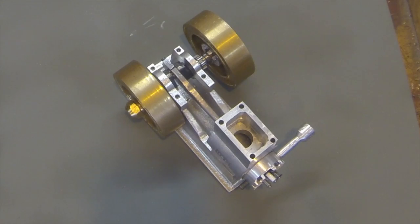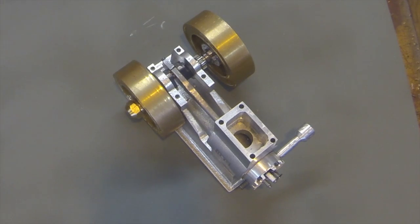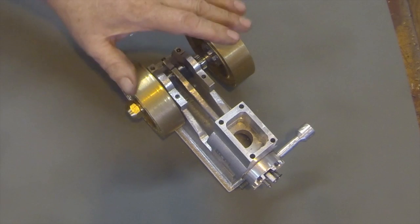Basically all the castings were the head and the base and two caps for the bearings and the two flywheels.